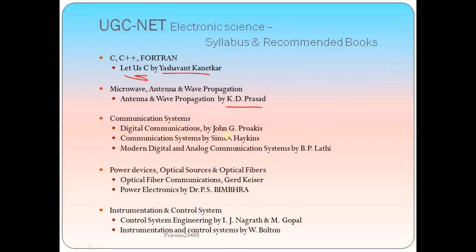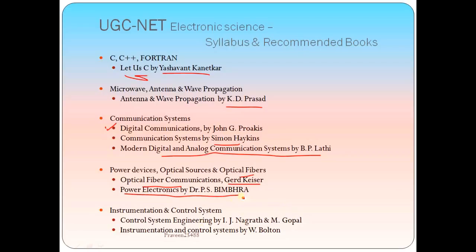For Communication Systems, John G. Proakis is the best book for digital communication. Another book is 'Communication Systems' by Simon Haykin, and 'Modern Digital and Analog Communication Systems' by B.P. Lathi. For Power Devices and Optical Sources, for optical fibers, 'Optical Fiber Communications' by Gerd Keiser is the best book. For Power Electronics, Y. Sembra is a secondary option. For Instrumentation and Control Systems, 'Control System Engineering' by I.J. Nagrath and M. Gopal is the best book, and for Instrumentation, W. Bolton is recommended.